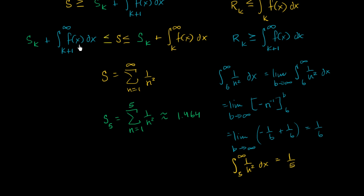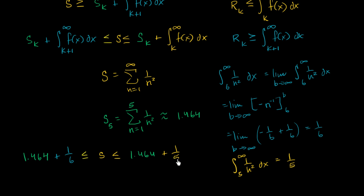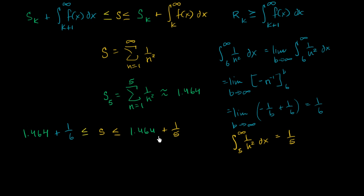Now we can put everything into the compound inequality. We have 1.464 plus one sixth is less than or equal to our sum s, which is less than or equal to 1.464 plus one fifth. One fifth equals 0.2, so the upper bound is 1.464 plus 0.2, giving us s is less than or equal to 1.664.